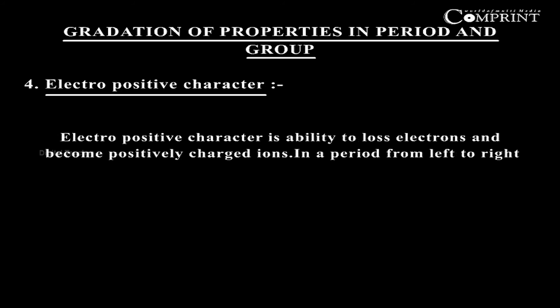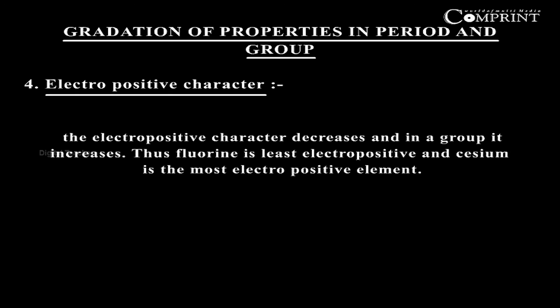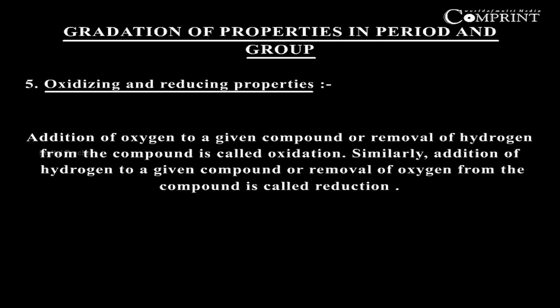Electropositive character is the ability to lose electrons and become positively charged ions. In a period from left to right, the electropositive character decreases, and in a group it increases. Thus, fluorine is the least electropositive and cesium is the most electropositive element.